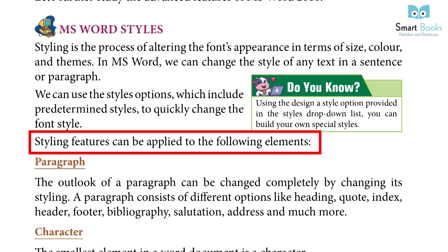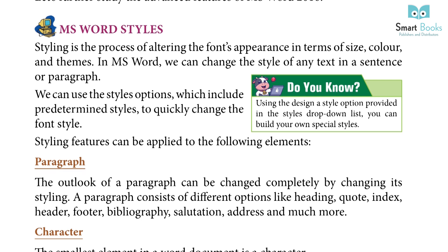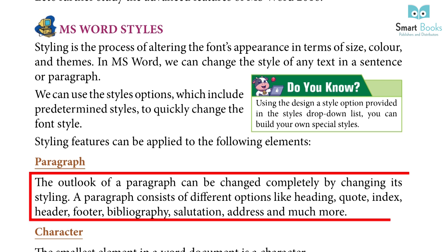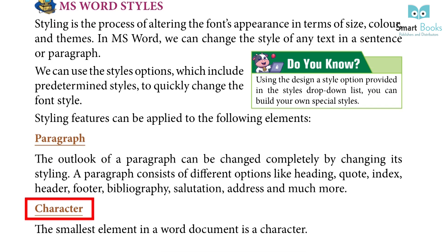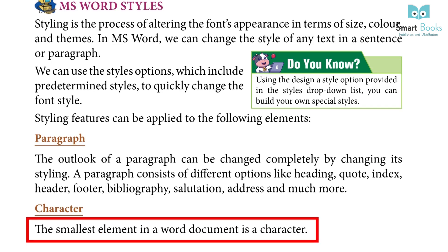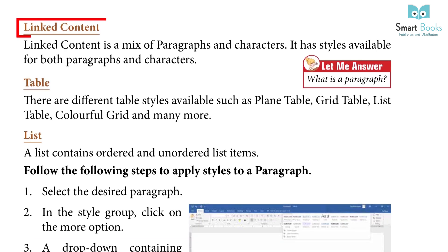Styling features can be applied to the following elements. Paragraph: The outlook of a paragraph can be changed completely by changing its styling. A paragraph consists of different options like heading, code, index, header, footer, bibliography, salutation, address and much more. Character: The smallest element in a word document is a character. Linked content is a mix of paragraphs and characters — it has styles available for both.